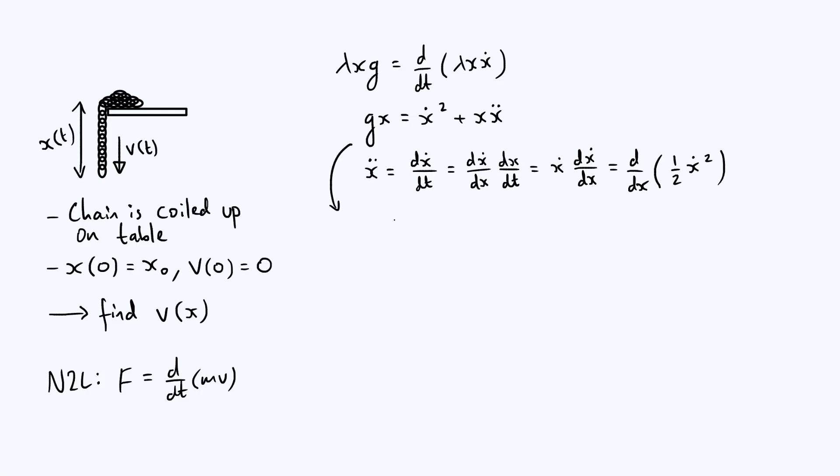So we've concluded that ẍ is the same as d/dx of ½ẋ². So let's go back to our equation of motion and rewrite it using this derivative identity. The left hand side is still gx. We've still got our ẋ² term, but now using our identity, you can write the final term as plus ½x d(ẋ²)/dx. So I want to do a couple of things to this equation. Firstly, I'm going to write ẋ as v from now on because we're done with all of this sort of derivative identity stuff.